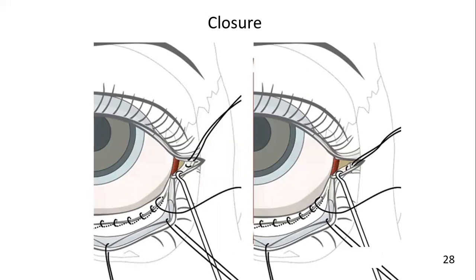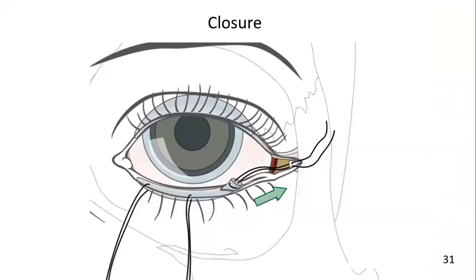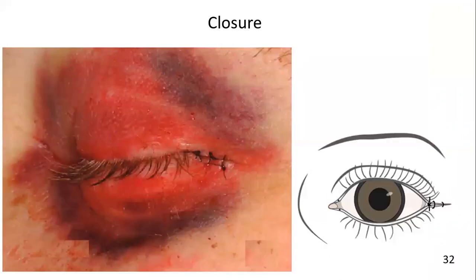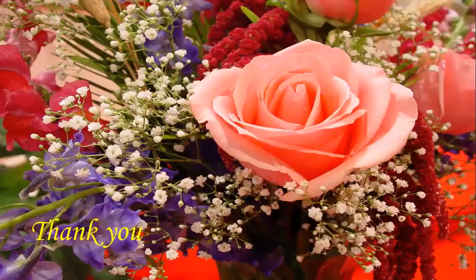The transconjunctival incision is closed from medial to lateral while the loops of the inferior canthopexy are still loose. The conjunctiva is usually closed with a running 6-0 fast-resorbing suture with buried knots. After closure of the conjunctiva is completed, the inferior canthopexy suture is tightened, bringing the lower eyelid into its original position. Subcutaneous sutures are placed along the horizontal skin line incision. Finally, the skin is sutured with 6-0 monofilament material. Thank you.